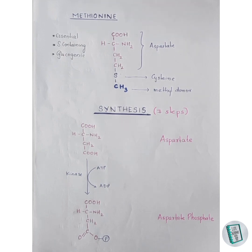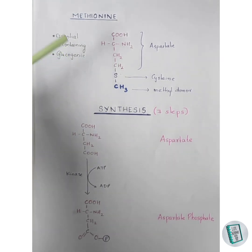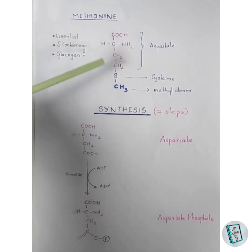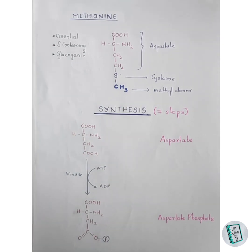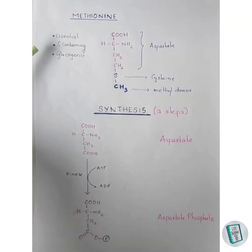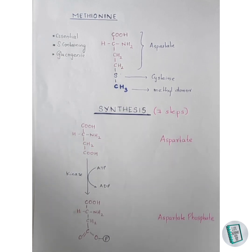Now let us go on to the synthesis and degradation of methionine. This is the structure of methionine — it is a sulfur-containing amino acid. The carbon skeleton of methionine is provided by aspartate, the sulfur group is donated by cysteine, and the methyl group is given by a methyl donor. Some important features: methionine is an essential sulfur-containing amino acid and it is glucogenic in nature, meaning its catabolism leads to an intermediate that helps in the synthesis of glucose.